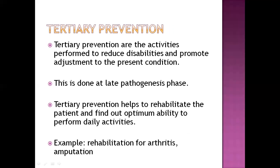Next is tertiary prevention, which is the final level of prevention. These are activities performed to reduce disabilities. Signs and symptoms have already occurred, and what we need to do is reduce disabilities and promote adjustment to the present condition of the patient. This is done at the late pathogenesis phase. Tertiary prevention helps to rehabilitate the patient and find their optimum ability.